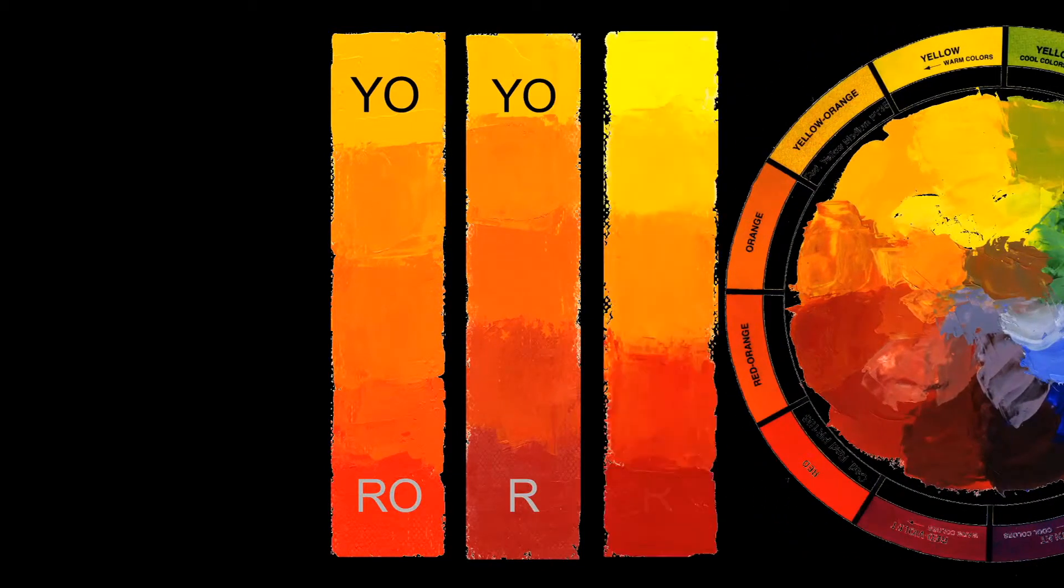To illustrate further how the chroma of orange changes with different contributing colors, in this illustration the yellow was changed to a cool yellow and used the cool mid-red again. These two colors are separated from orange by one step each on the color wheel.